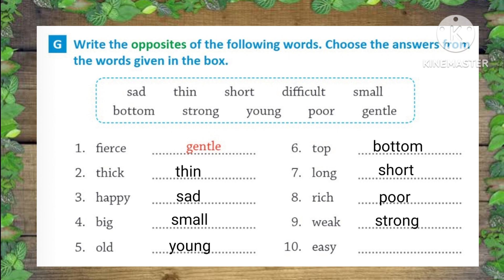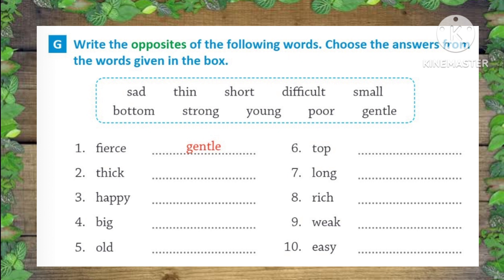Rich — poor. Weak — strong. Easy — difficult. Good.